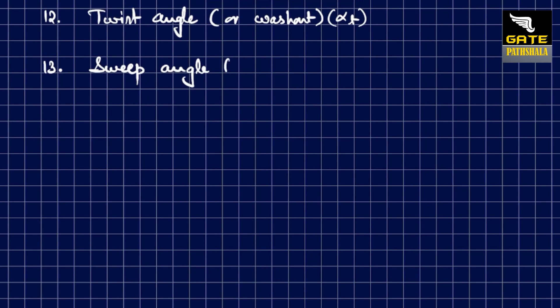Then comes the sweep — what kind of sweep you want: forward sweep, backward sweep, the leading edge sweep angle, quarter-chord sweep, half-chord sweep, and trailing edge sweep. There are different sweep-back angles to consider. The dihedral angle, denoted by capital gamma (Γ), is also a key parameter.